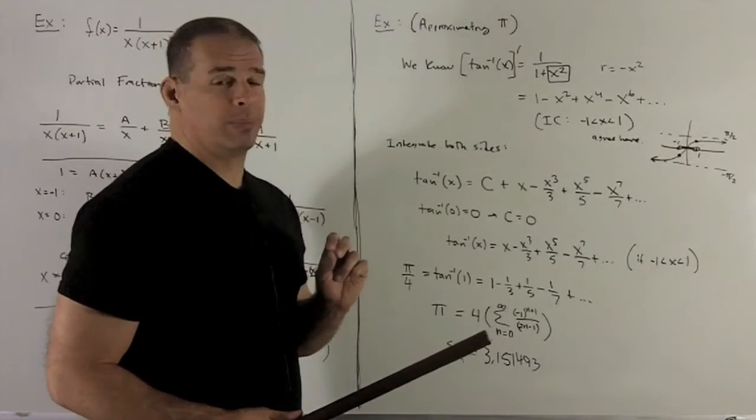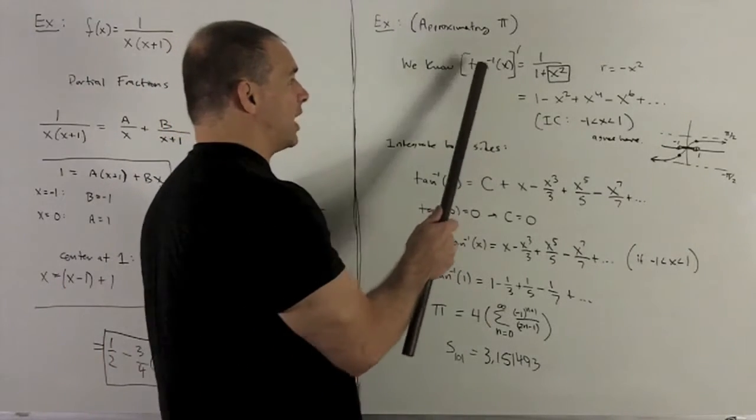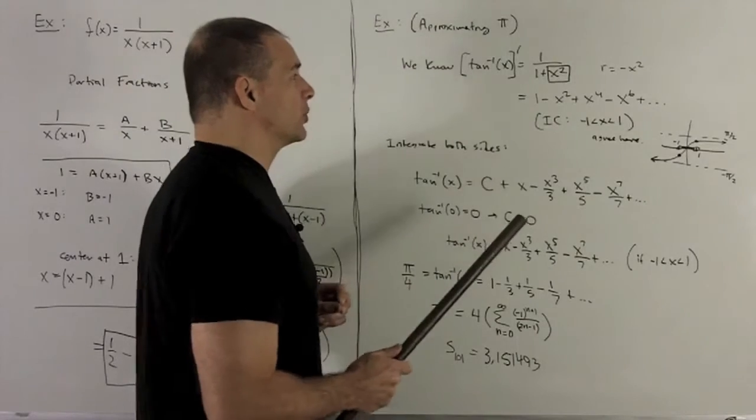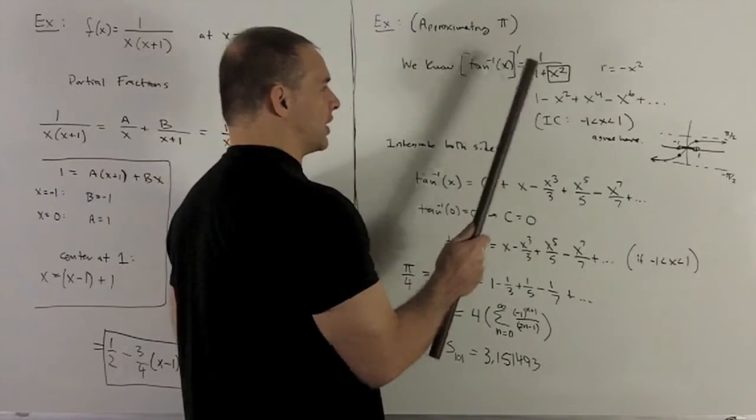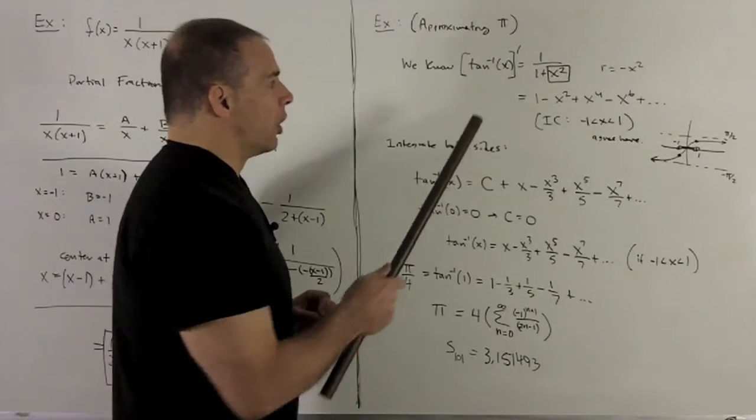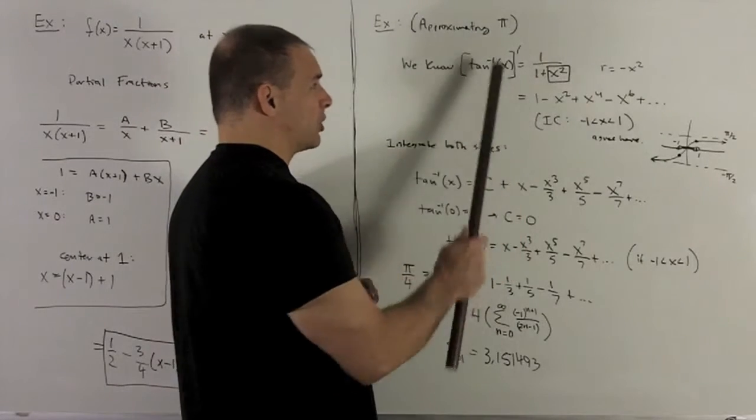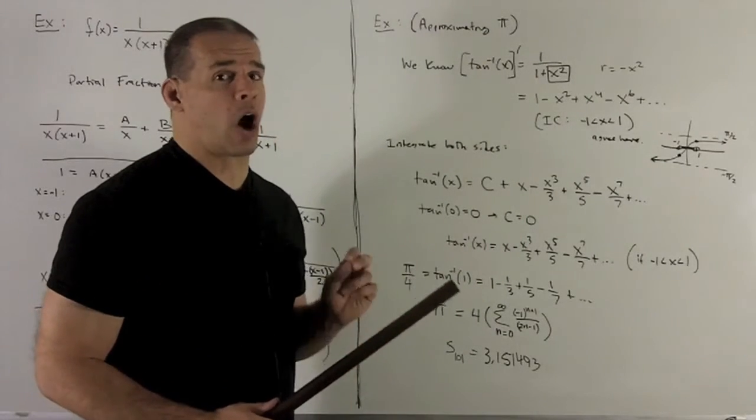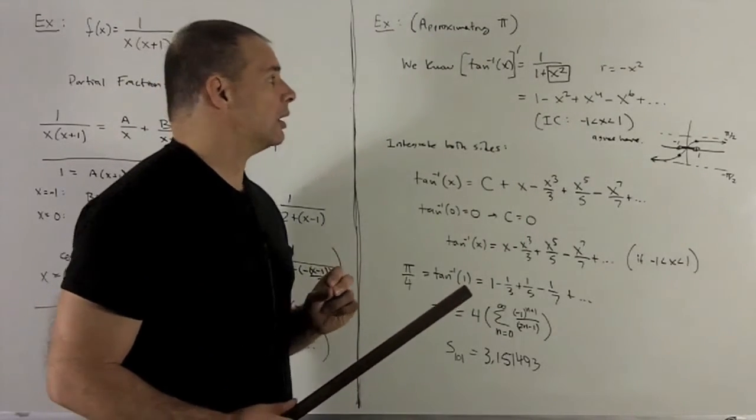We're going to start with an unlikely place. We know that inverse tangent, if I take its derivative, is going to be equal to 1 over 1 plus x squared. So if you notice, this looks like this geometric series trick we've been using with r equal to minus x squared.